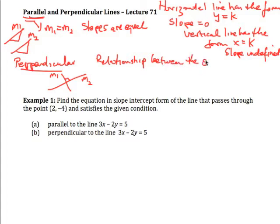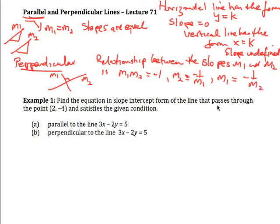The relationship between the slopes m1 and m2 is in fact that m1 times m2 is equal to negative 1, or we could write this as m2 equals negative 1 over m1 or m1 equals negative 1 over m2.